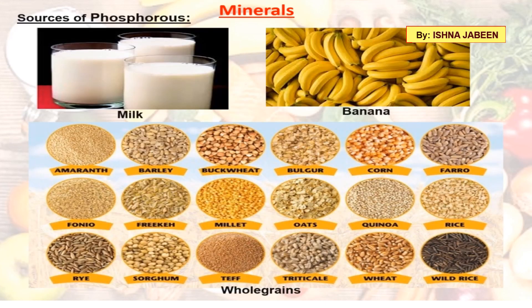Phosphorus sources include milk, banana, and whole grains like barley, corn, millet, oats, rice, rye, sorghum, and wheat. Phosphorus is required for healthy bones and teeth.